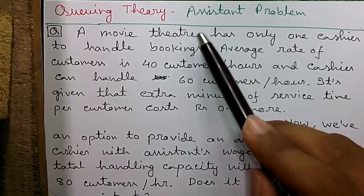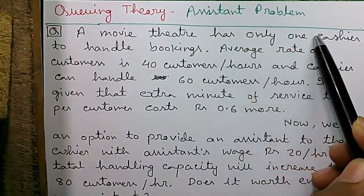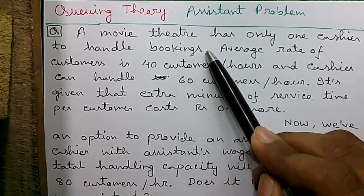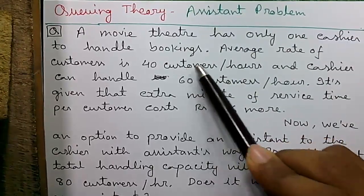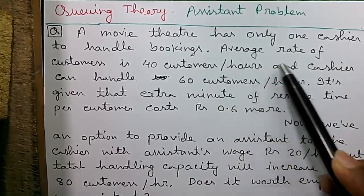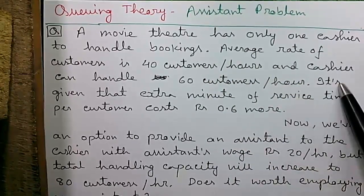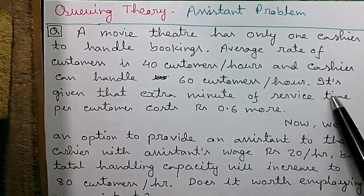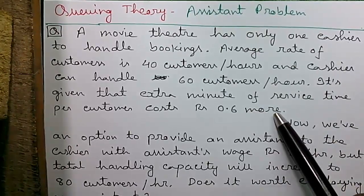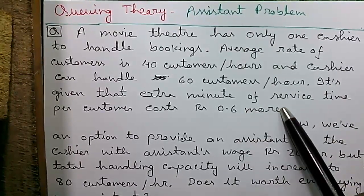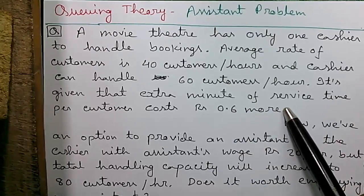Our question is, a movie theater has only one cashier to handle all the bookings. Average rate of customers is 40 customers per hour and the cashier can handle 60 customers per hour. It's given that extra minute of service time per customer costs Rs. 0.6 or 60 paisa per minute.